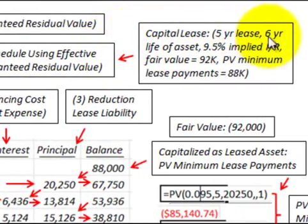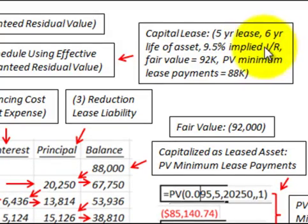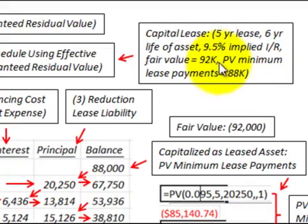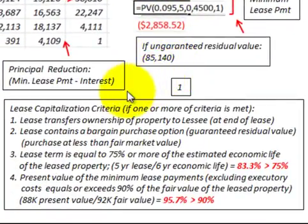Our example is a capital lease with a five-year lease term and a six-year economic life of the asset being leased. The implied interest rate is 9.5% per year. The lease has a fair value of $92,000 and a present value of the minimum lease payments of $88,000.